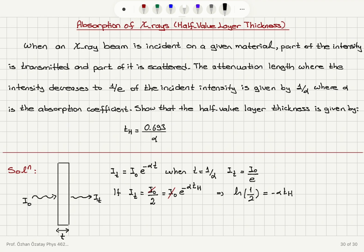We find the half-value layer thickness to be natural logarithm of 2 divided by alpha. Since the numerical value of natural logarithm of 2 is 0.693, this gives t_h equal to 0.693 divided by alpha.